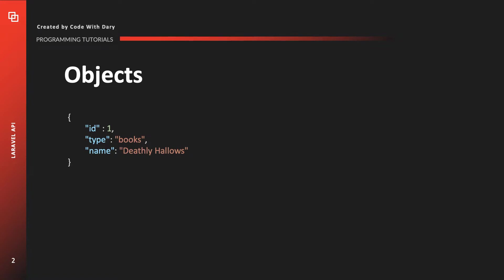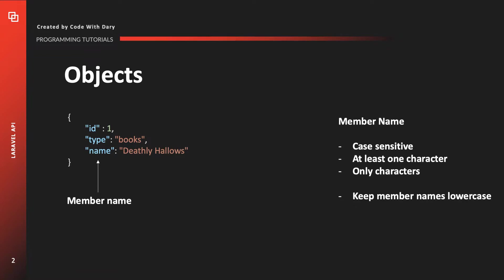You can see that we have ID, type, and name. This is called a member, or even better, a member name. These member names have some rules you need to follow. First off, it's case sensitive, so be aware of that. It needs to have at least one character, so you can't have an empty member. You can only use characters, and a member must start and end with a global character. Keep all your member names in lowercase and pick your own convention — whether it's snake case, kebab case, or camel case. I recommend snake case, mostly because whenever you call the toJson method in your Laravel model, the model attributes will convert to snake case.